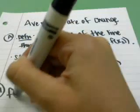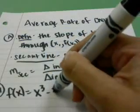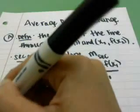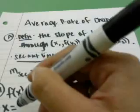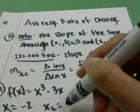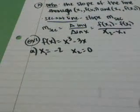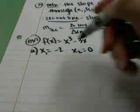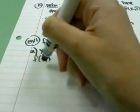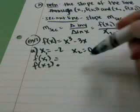Example number 1. f of x equals x to the third power minus 3x. And we're going to do this twice. For part A, we're going to do when x equals negative 2. So x1 equals negative 2, and x2 equals 0. If that's what we're looking at, we're going to start by finding out our f of x1 and our f of x2. To find those two things, we're going to plug them into our original equation.